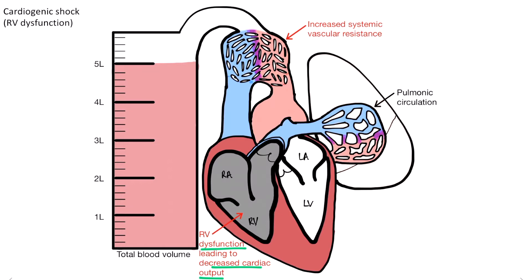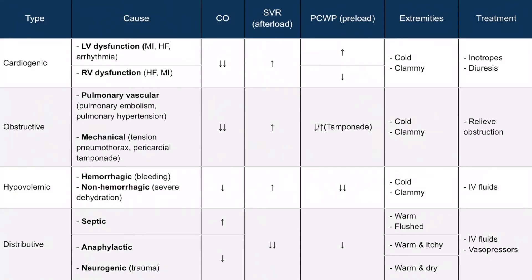In right ventricular dysfunction, the pump failure causes increased pressure in the right atrium. The increase in right atrial pressure doesn't allow a lot of blood to enter the heart — in other words, the preload is decreased. If there's not a lot of blood entering the right side of the heart, there won't be much going to the left side either. Therefore, pulmonary capillary wedge pressure is decreased. From the table, in both left and right ventricular dysfunction there will be a decrease in cardiac output and an increase in systemic vascular resistance. The pulmonary capillary wedge pressure will be increased in left ventricular dysfunction and decreased in right ventricular dysfunction.